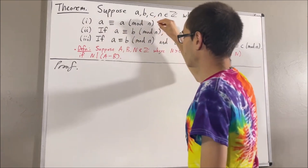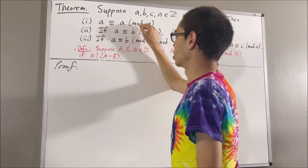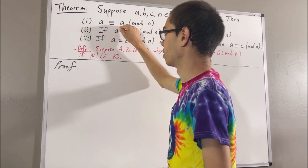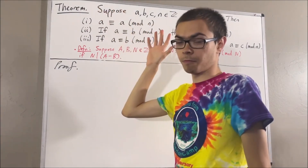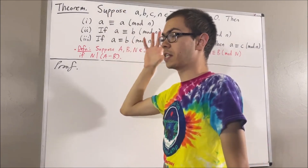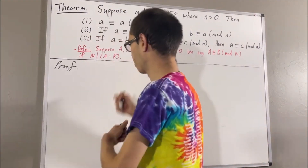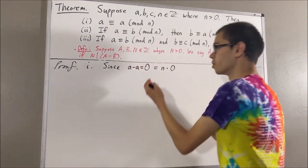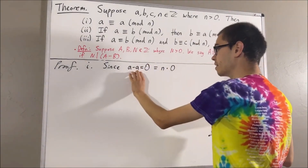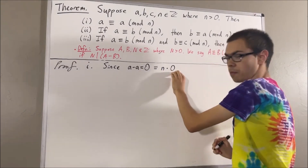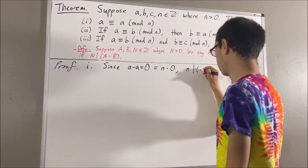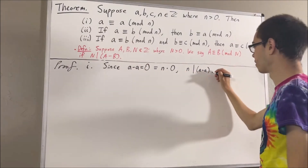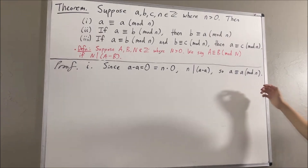Let's start out by proving this first fact. We're trying to prove a is congruent to a modulo n. By our definition, that means we want to show that n divides a minus a, which means we want to show n divides 0. We know that n divides 0 because 0 is equal to n times 0. So a minus a equals n times some integer, which means n divides a minus a. By our definition, this means a is congruent to a modulo n. So this proves our first fact.